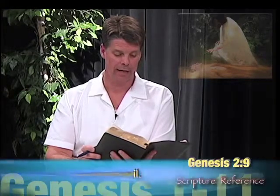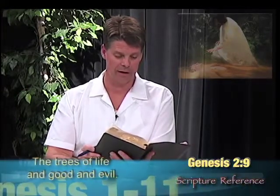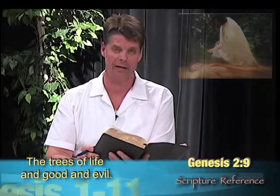In verse 8, this is life in the garden. We're backed up a little bit, and it says the Lord God — notice this is the third or fourth reference to the Lord God, progressive revelation. The Lord God planted a garden eastward in Eden, and there He put the man whom He had formed. Out of the ground, the Lord God made every tree grow that is pleasant to the sight and good for food. The tree of life was also in the midst of the garden, and the tree of knowledge of good and evil.